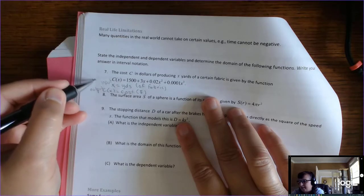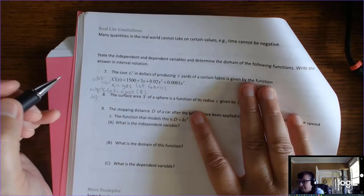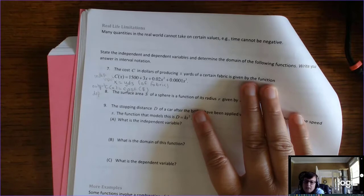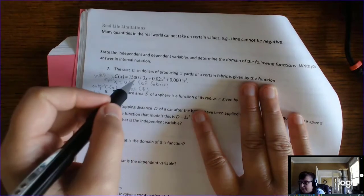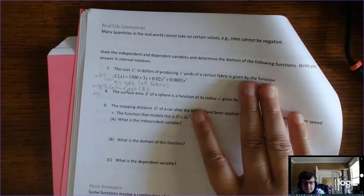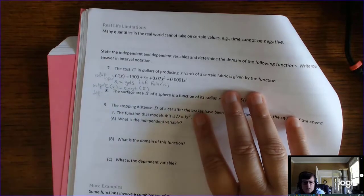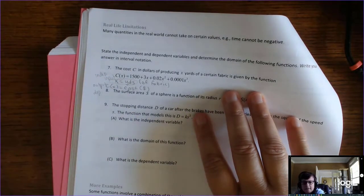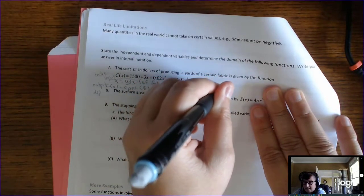All right, this is my independent variable. This is my dependent variable. Then it says, find the domain of the functions. Well, there's just two restrictions that you have to know. Is there a denominator? No. So there's no restrictions on the denominator. Is there a radical with an even index? No. So, this domain would normally be all real numbers. But, last question. Is there a real world restriction on x? Yes. Can you have negative yards of fabric? No.